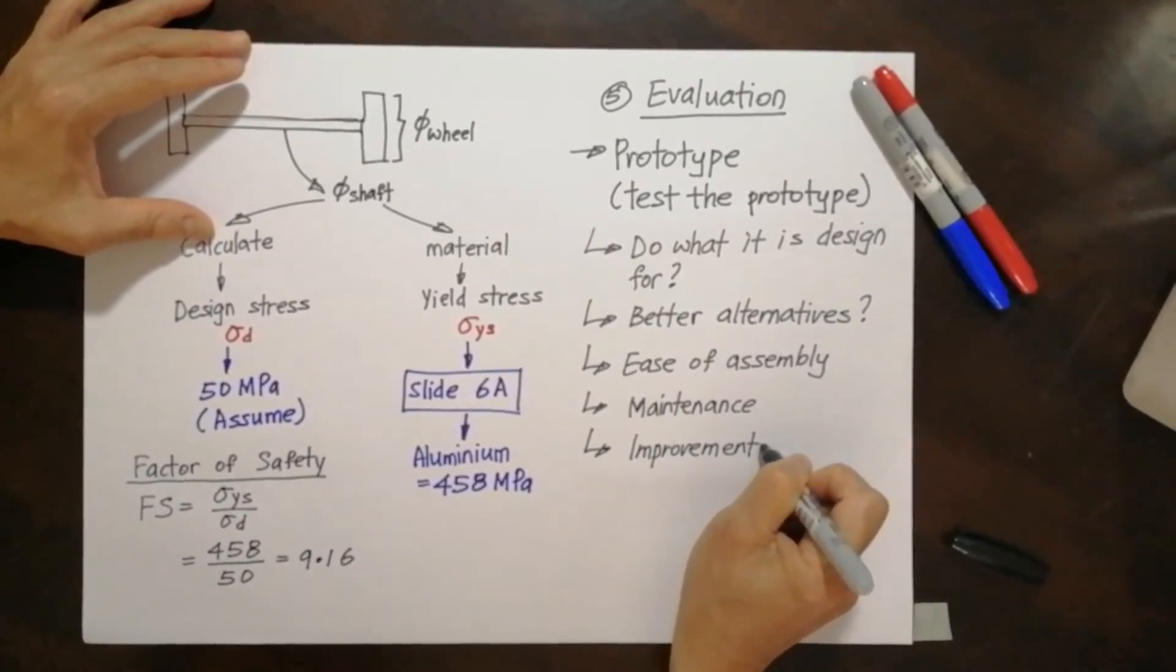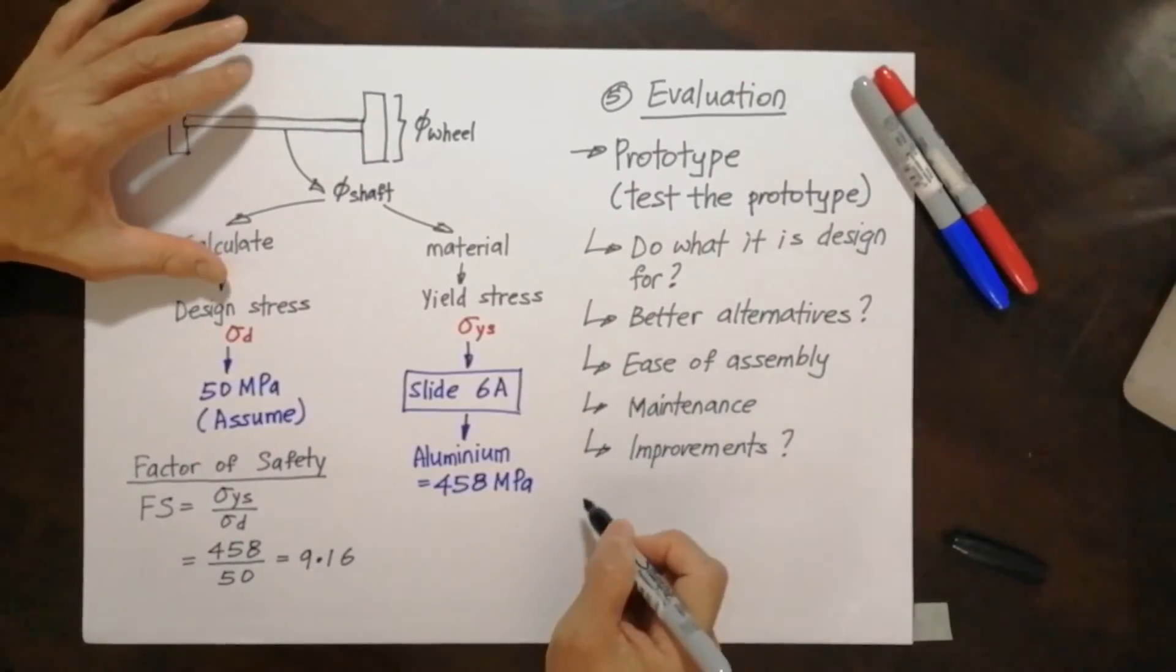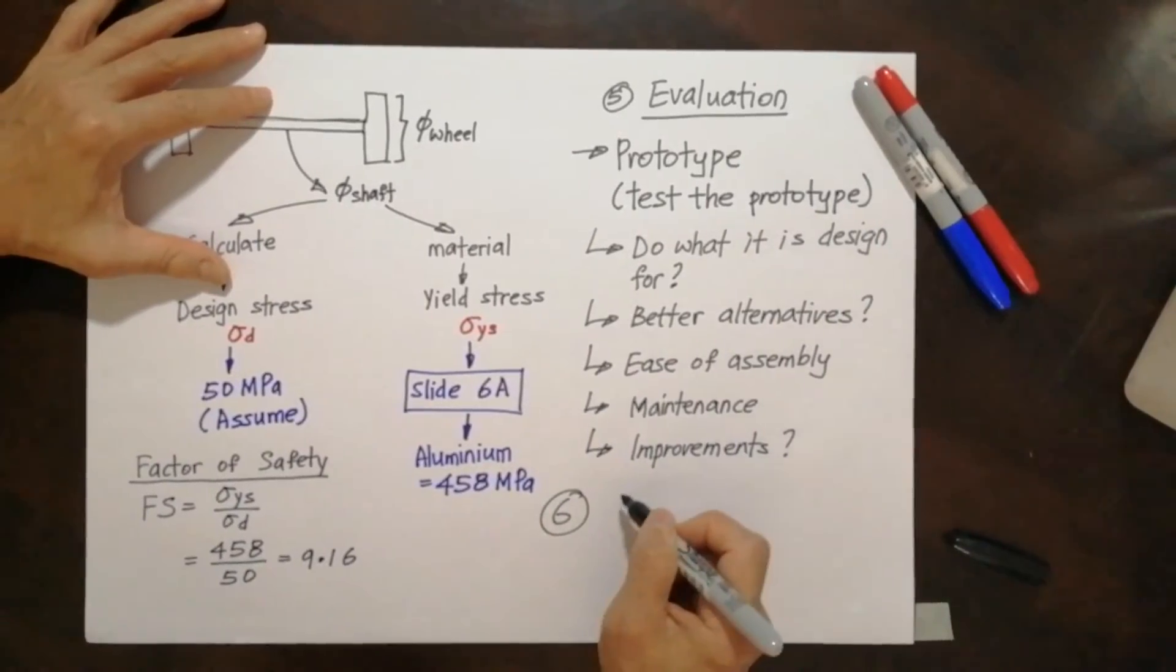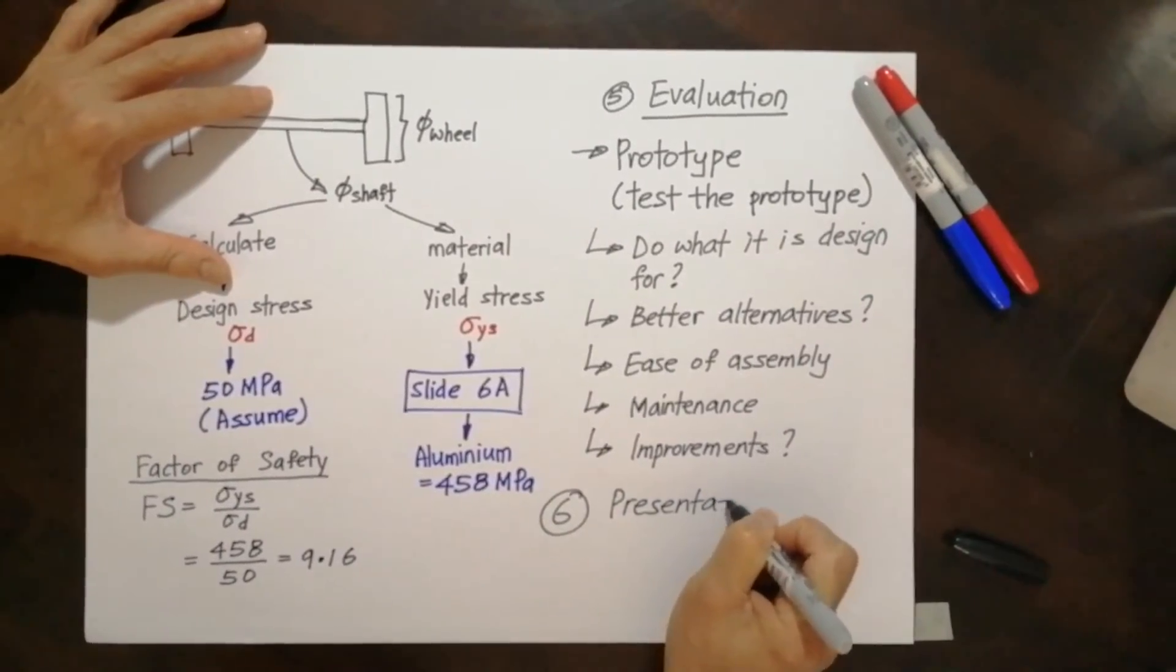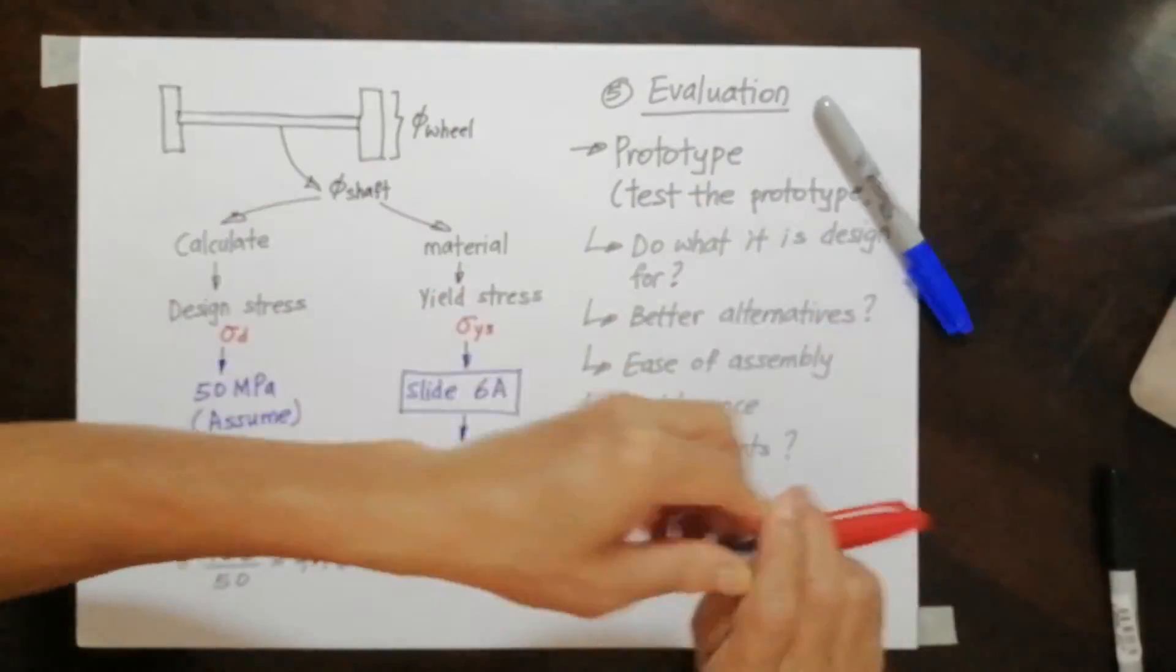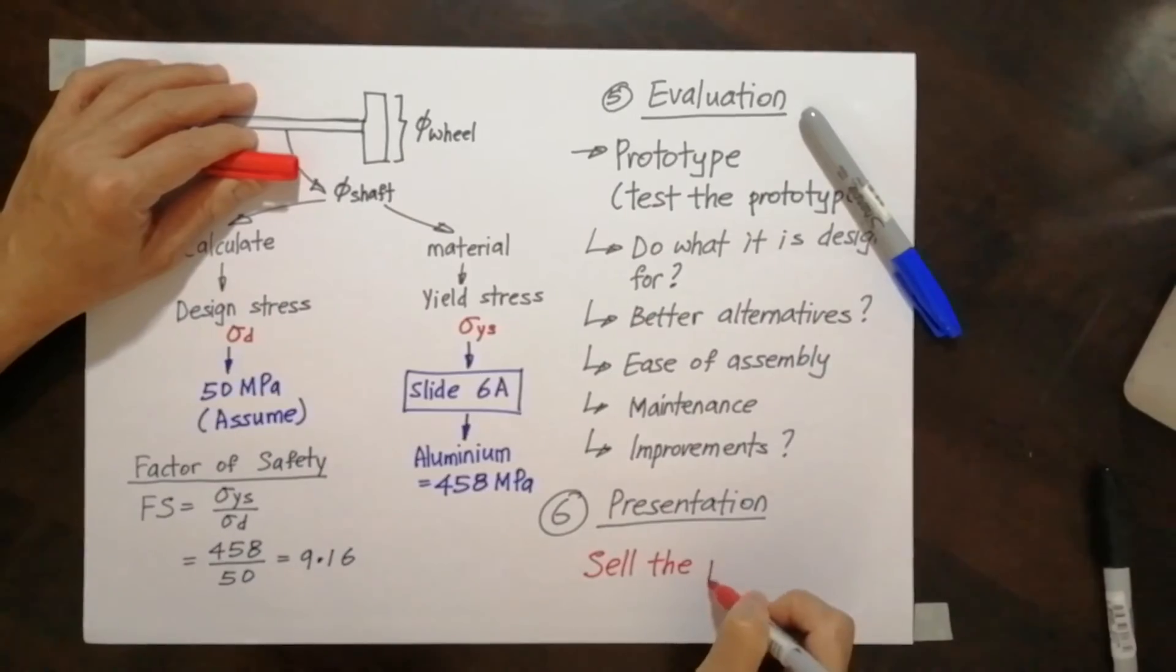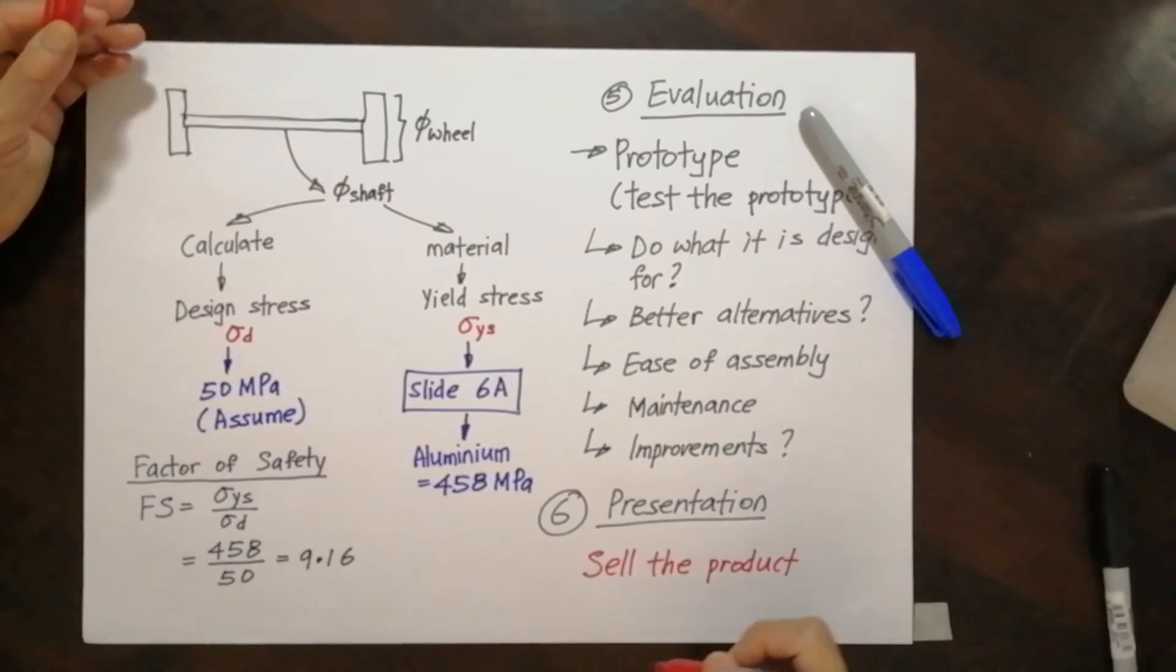And all this must lead to one thing, which is called improvement. Is there any improvement required to the design? Now the sixth phase, or the final phase, the last one is called presentation. This phase is simply sell the product. That's the main thing.